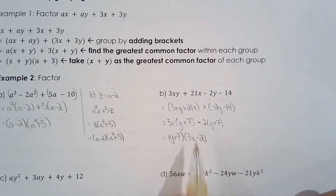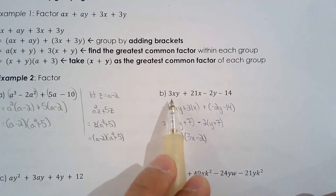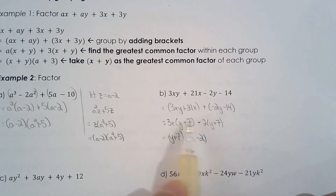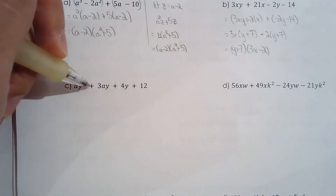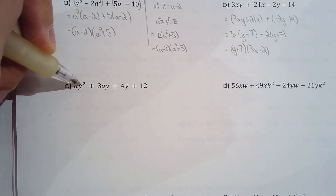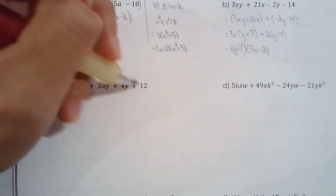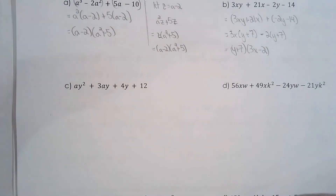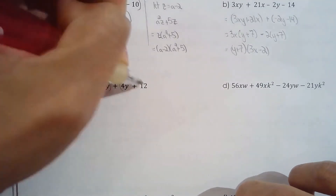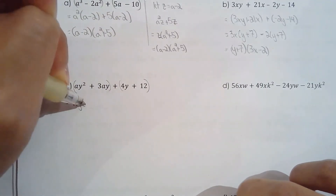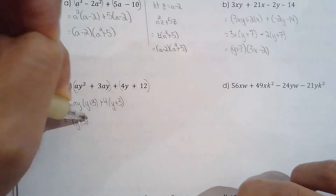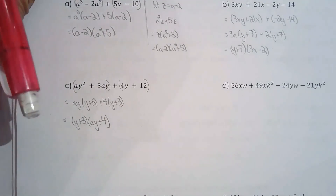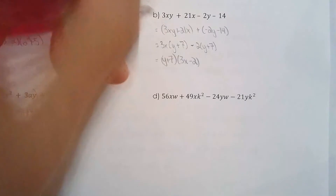Students ask: how do I know I can factor by grouping? With enough practice you'll be able to envision the grouping in your head and see if a common binomial emerges. For example, if I factor a and y from the first group I'll be left with (y + 3), and factoring 4 from the second group also leaves (y + 3). So (y + 3) is a common factor — that envisioning takes practice.